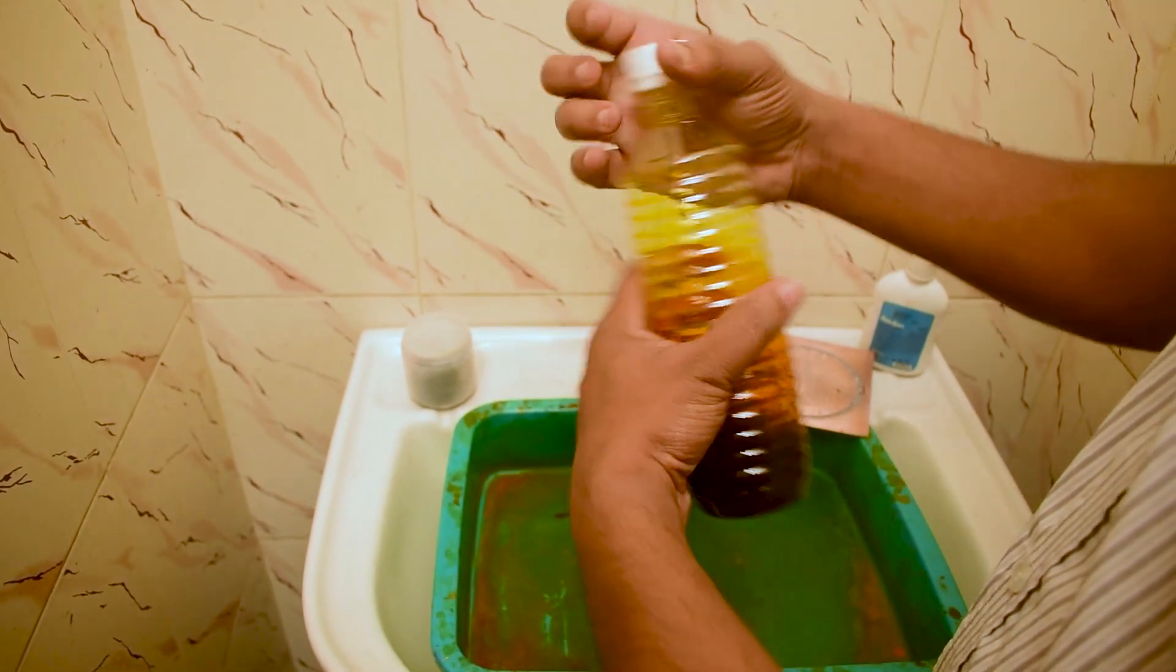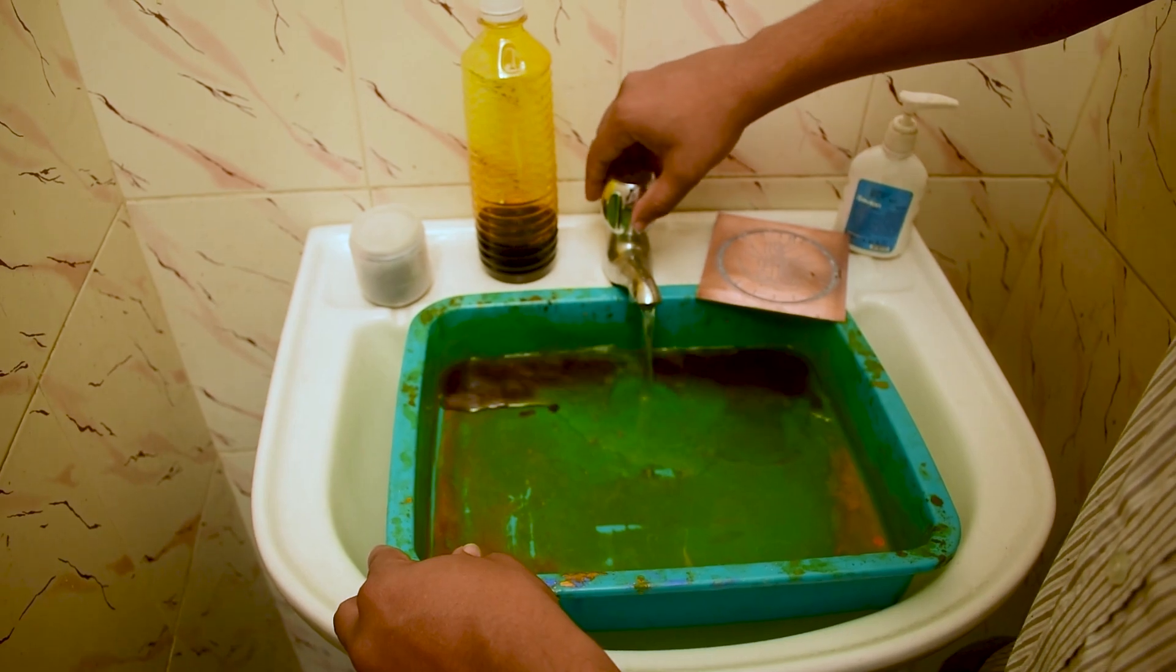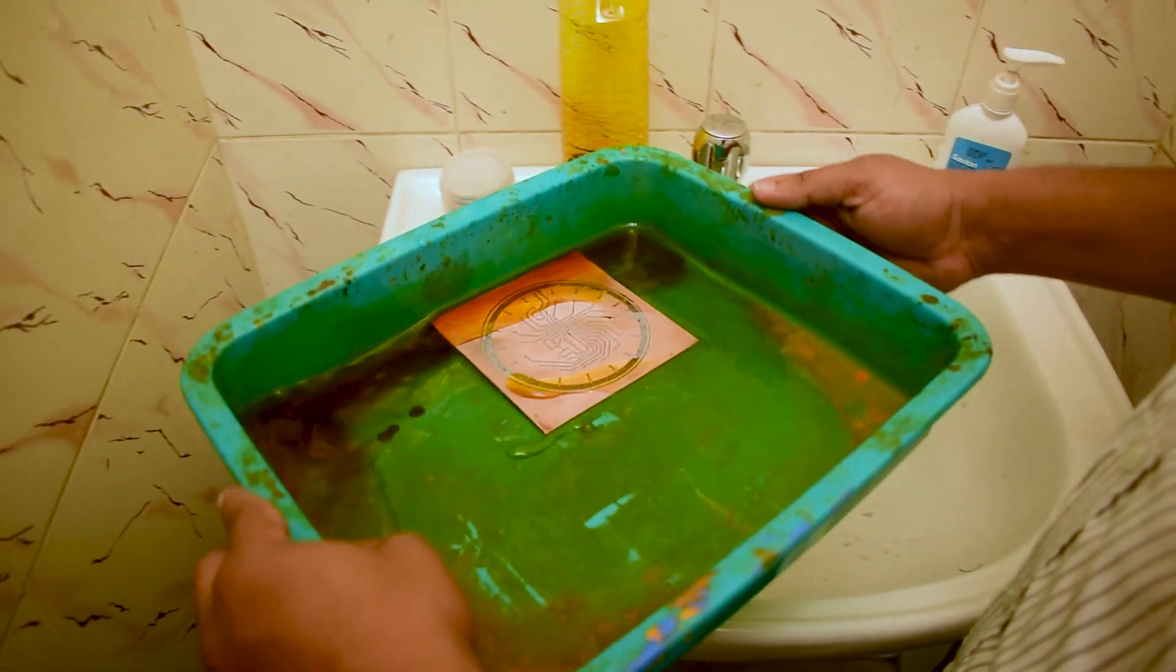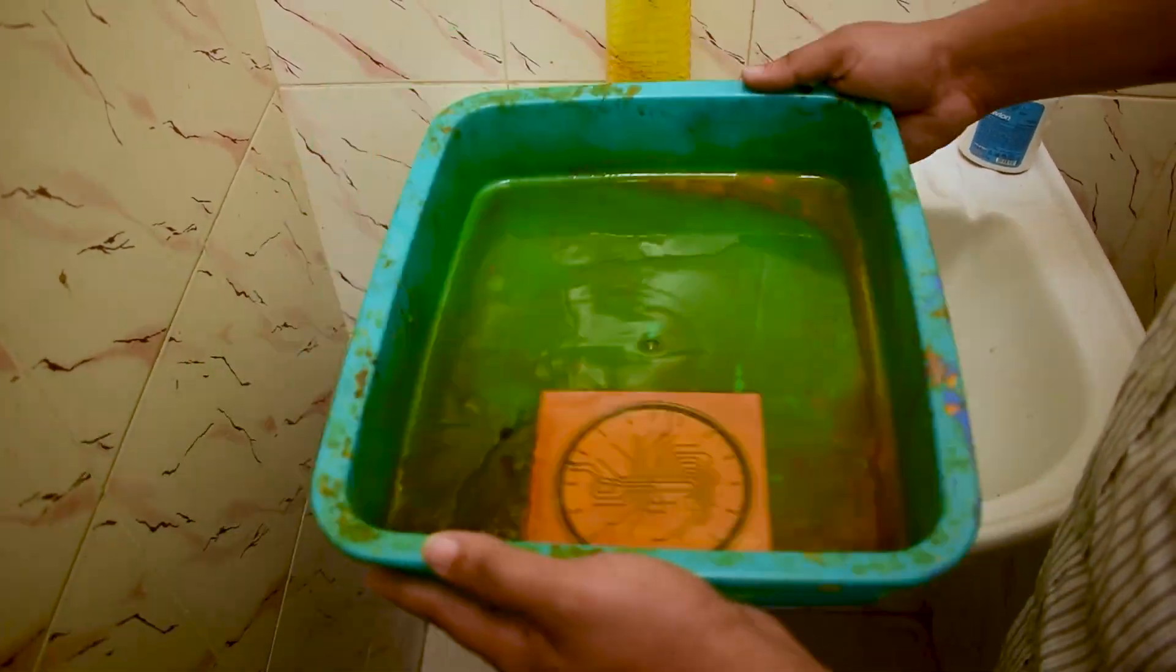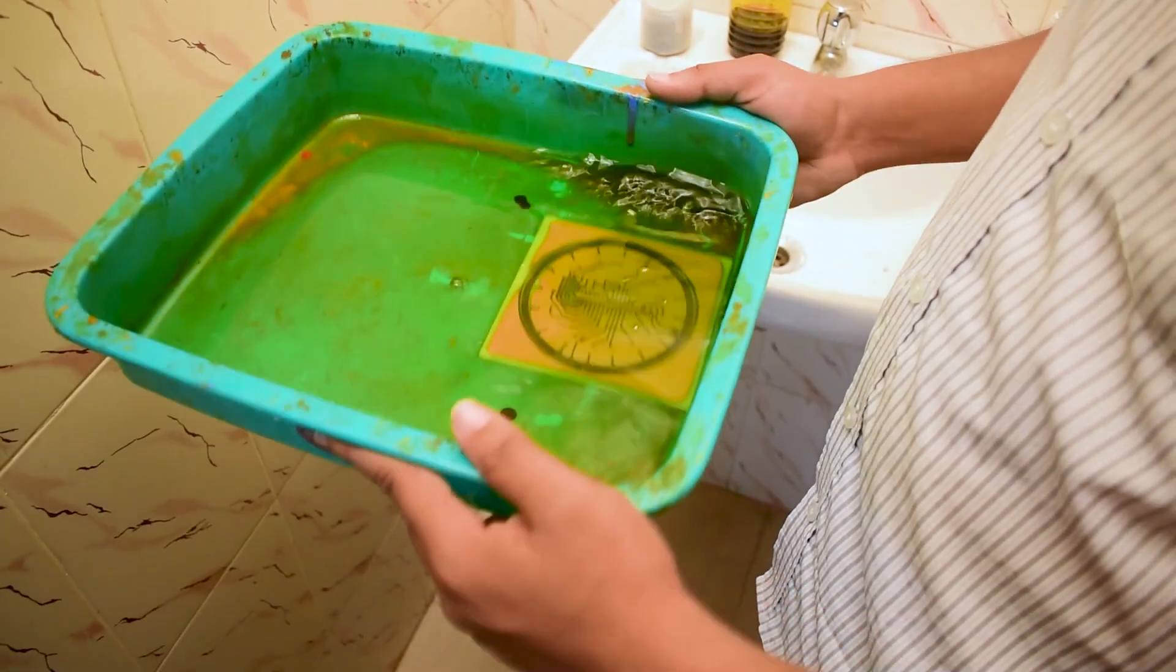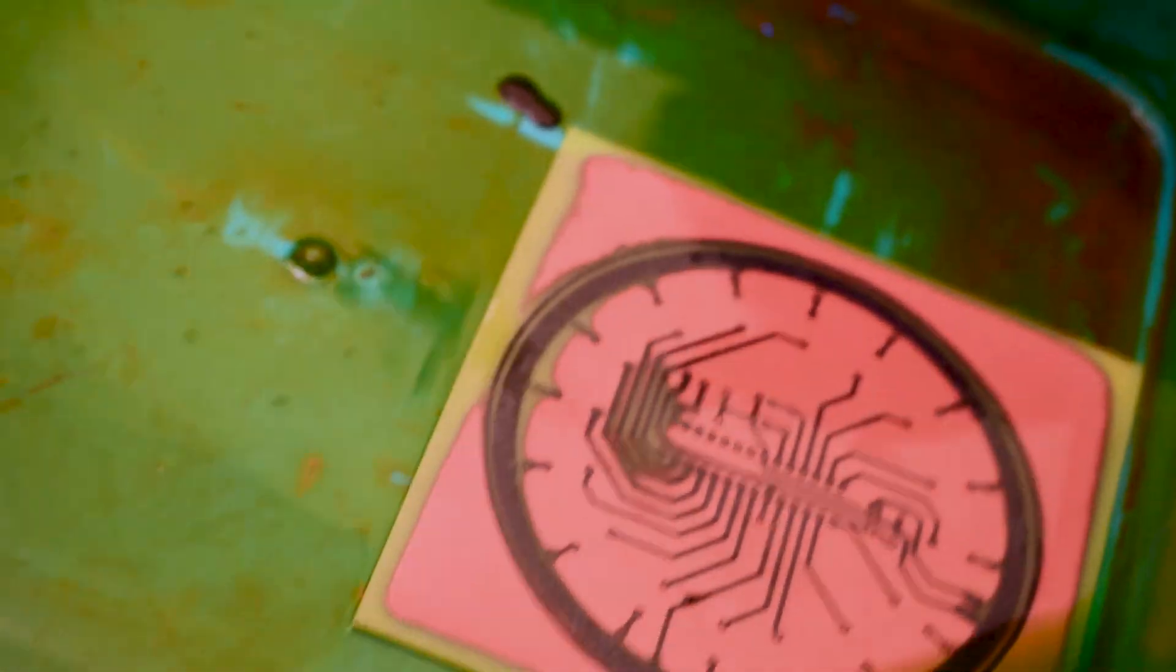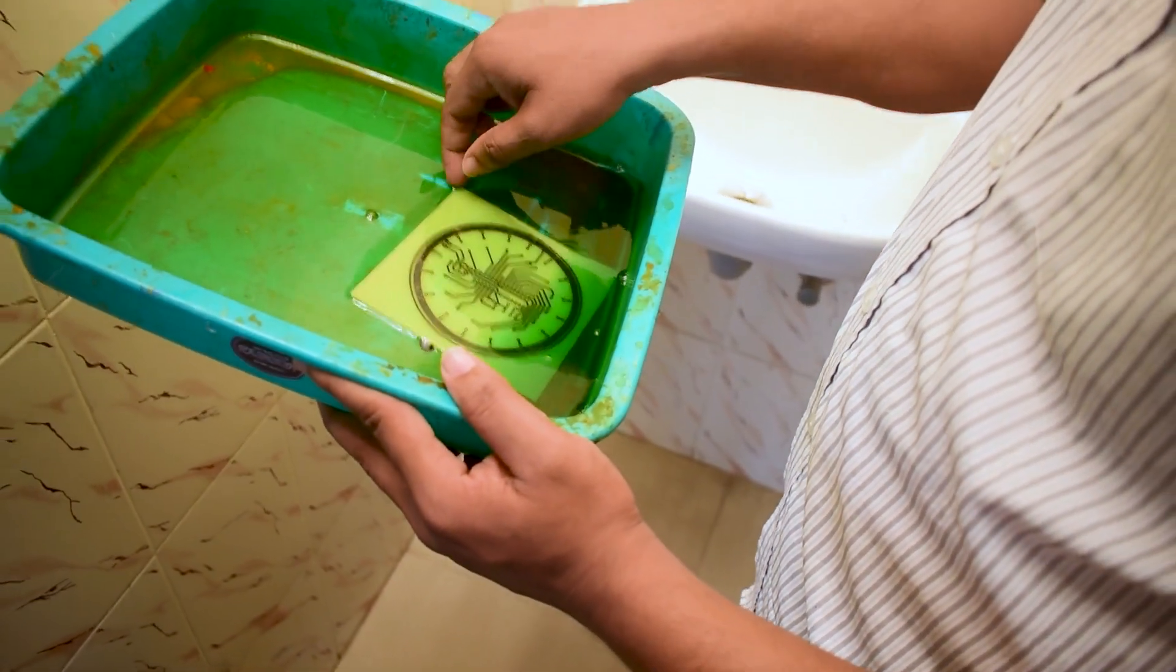The next step is to dip the board in the ferric chloride solution. Ferric chloride will dissolve the non-coated area on the clad. For that, we have to dilute the concentrated ferric chloride in the plastic tray. And let's place the board on it. Gently shake the tray side to side until the copper dissolves in the ferric chloride solution. We can see the copper being dissolved, leaving only the traces behind. After few minutes, we can see that the copper is completely dissolved except in the printed area.